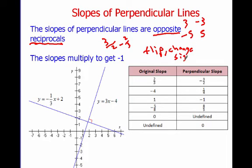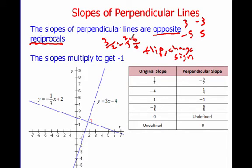The way you can tell if two numbers are opposite reciprocals is they multiply to get negative 1. If I take these two numbers and multiply them: 3 times 2 is 6, 2 times 3 is 6, with a negative in there it's negative 6 over 6, which equals negative 1.